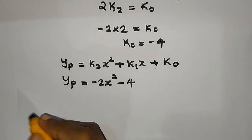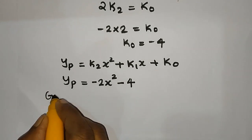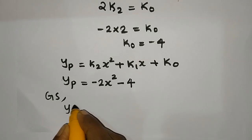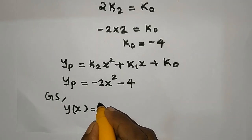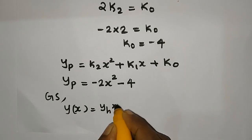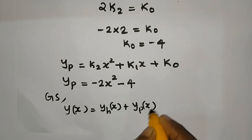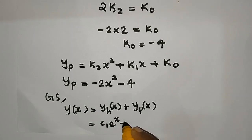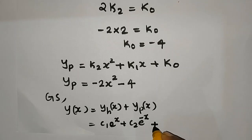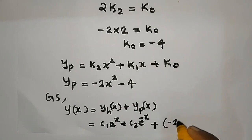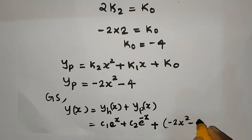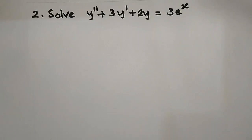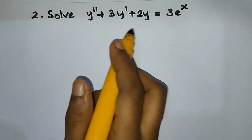So yp equals minus 2x² minus 4. The general solution is y(x) equal to c1·e^x plus c2·e^(minus x) plus minus 2x² minus 4.